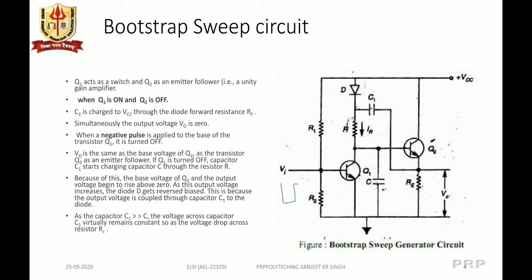We are considering the initial situation where transistor Q1 is in the ON state and Q2 is in the OFF state. Therefore, the capacitor C1 is charged to VCC through the diode's small forward resistance RF. At this instant, the output voltage V0 is 0, where V0 is the output voltage across the emitter resistance RE.